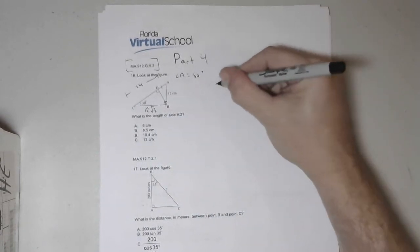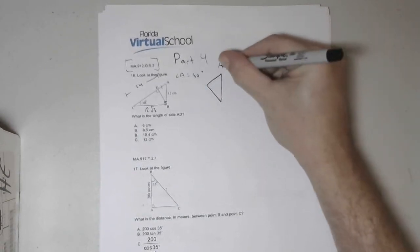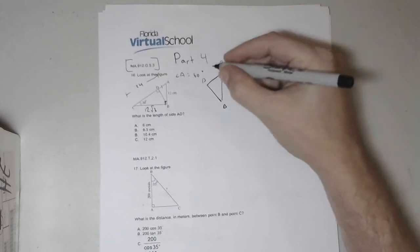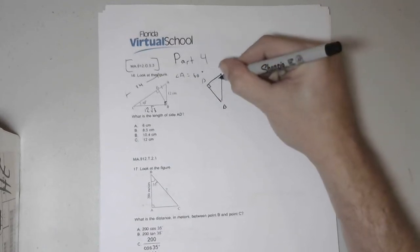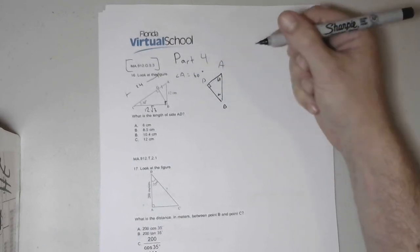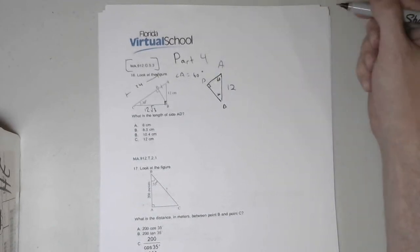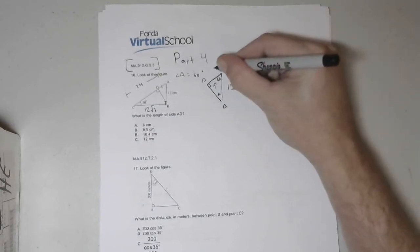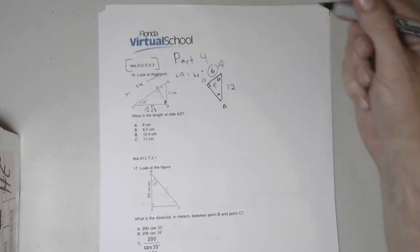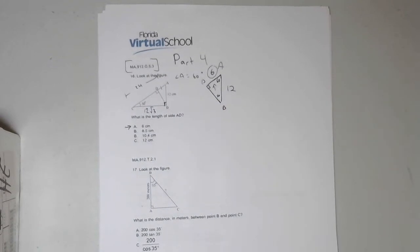Now if I look at triangle ADB, this is a right triangle. This angle is still 60°, that's 30°, so the hypotenuse of this triangle is 12, which means that across from the 30° is half of 12, or 6 — 6 centimeters. Choice A.